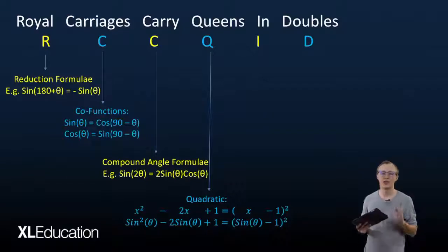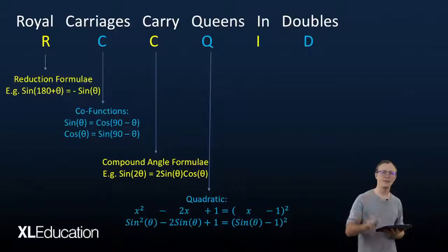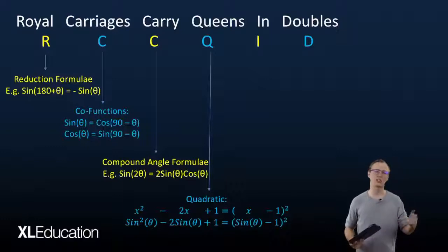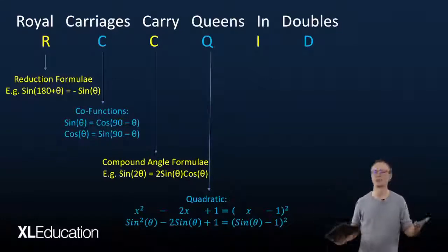So queens stands for quadratics. Very often these sine functions or cos functions try to disguise themselves as a quadratic. So a quadratic is something in the form x² - 2x + 1 = 0.